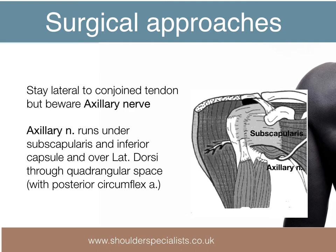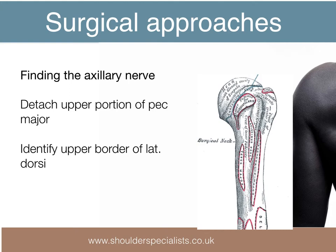At this stage the main structure at risk is the axillary nerve, which passes back just below the lower border of the subscapularis and over the upper border of the latissimus dorsi tendon. It then passes back through the quadrangular space along with the posterior circumflex artery, then curls back around the posterior and lateral part of the surgical neck of humerus on the undersurface of the deltoid. It may be helpful to incise the upper portion of the pec major tendon in order to identify the nerve as it passes over the upper border of the latissimus dorsi.